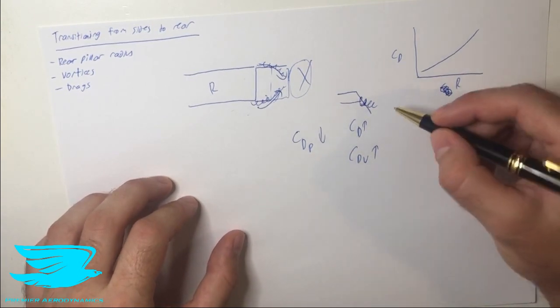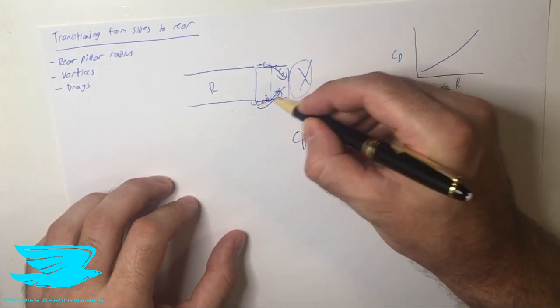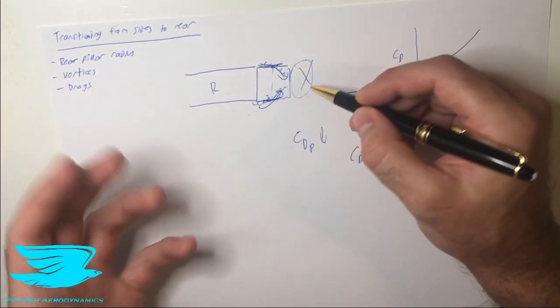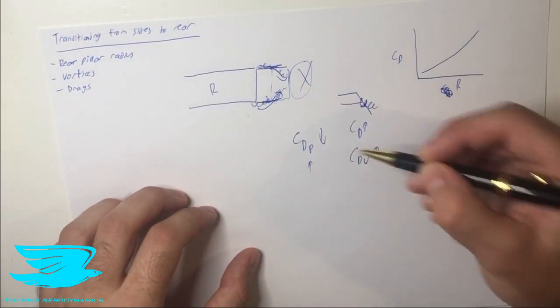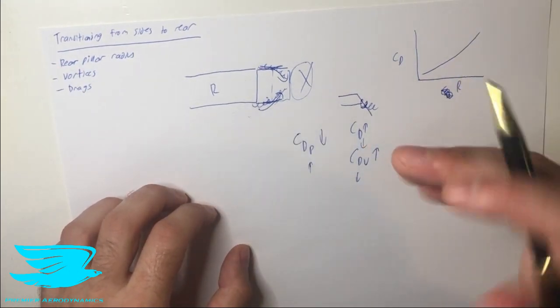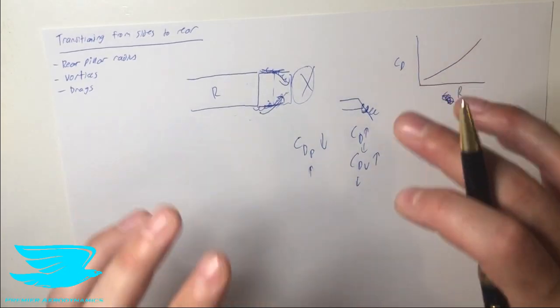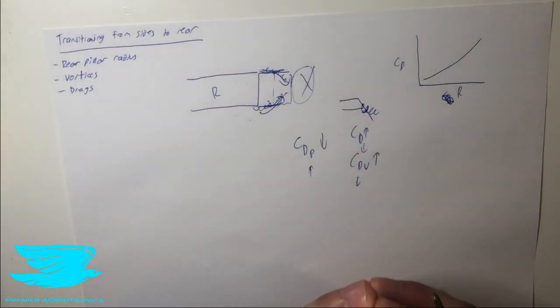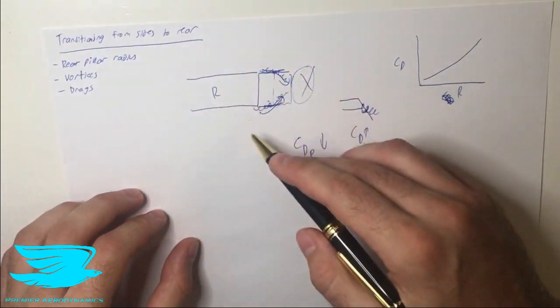So on that note, it's actually a good idea to keep these edges here quite sharp. So that even though we will get a bigger wake and the pressure drag will then increase, the vortex drag will reduce, and that will result in the overall drag reducing. Because at this point in time, the vortex drag is far more important in terms of the overall drag than the pressure drag.